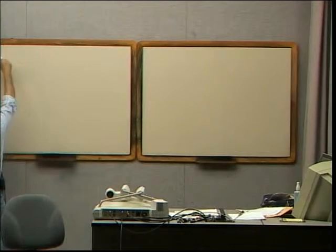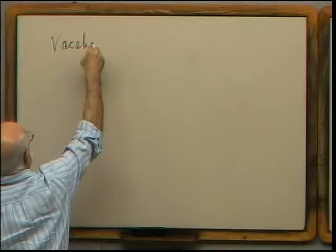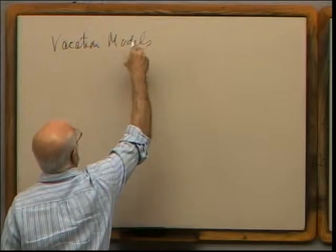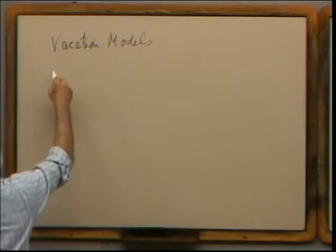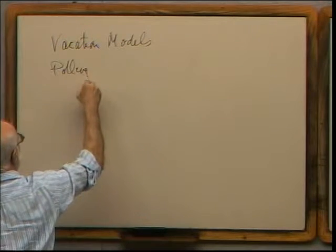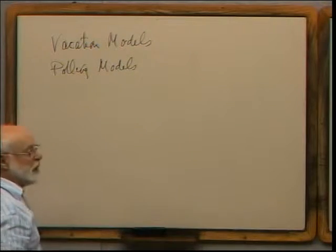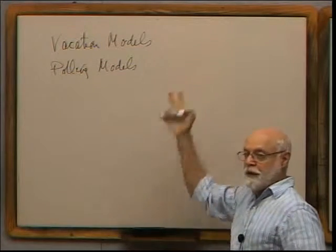Today I want to talk about vacation models and a little bit about polling models — that's where we left off last time. Before we start, are there any questions? I'm looking at exercise 12 on page 222, which is called the MG/1 queue with server vacation times. I just googled 'vacation models in queuing theory' and 'polling models in queuing theory' before class, and in each case I got a couple hundred thousand hits — so this is a real subject.